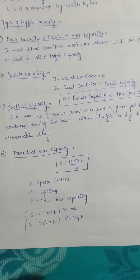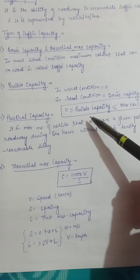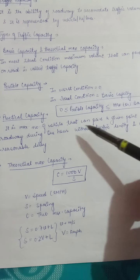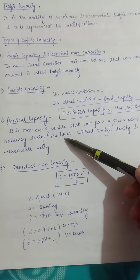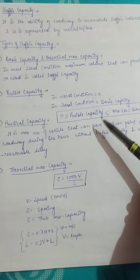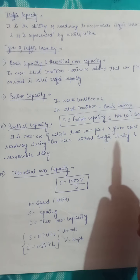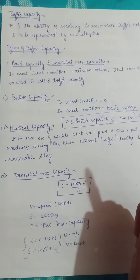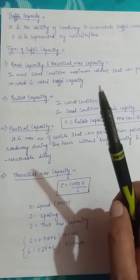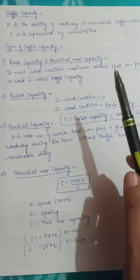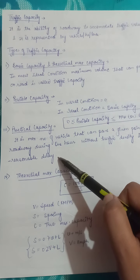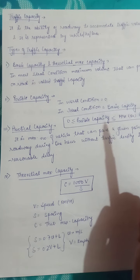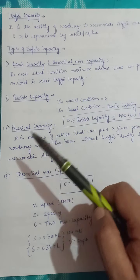Now we study practical capacity. Practical capacity is the maximum number of vehicles that can pass a given point on a roadway during one hour without traffic density and unreasonable delay. So practical capacity is the maximum number of vehicles passing any one particular point of a roadway in one hour, with no traffic density and no unreasonable delay.